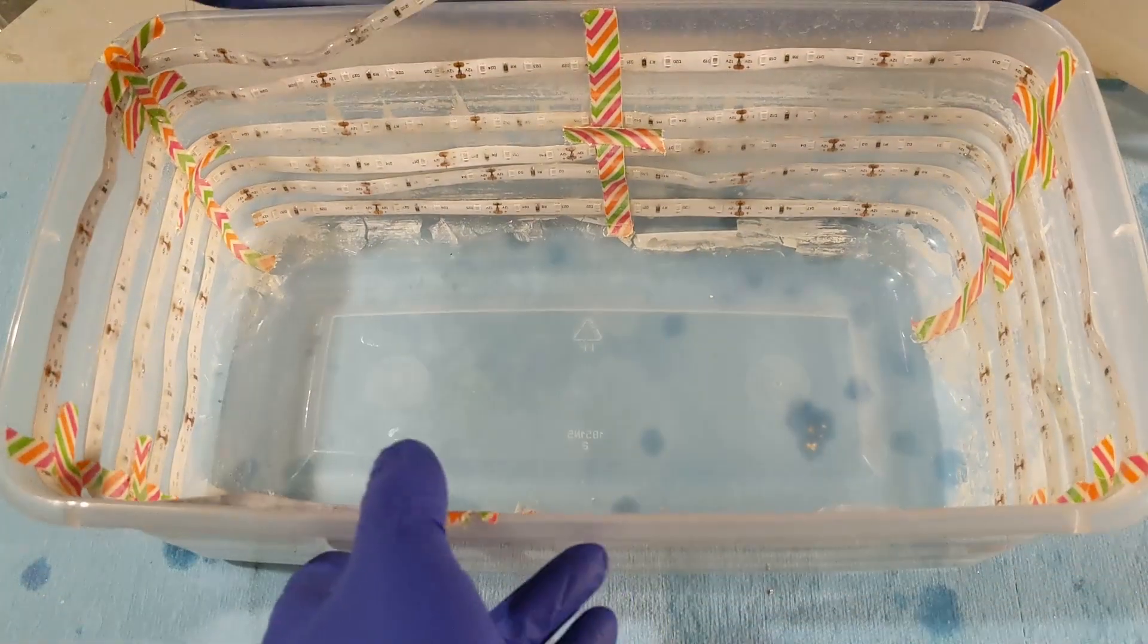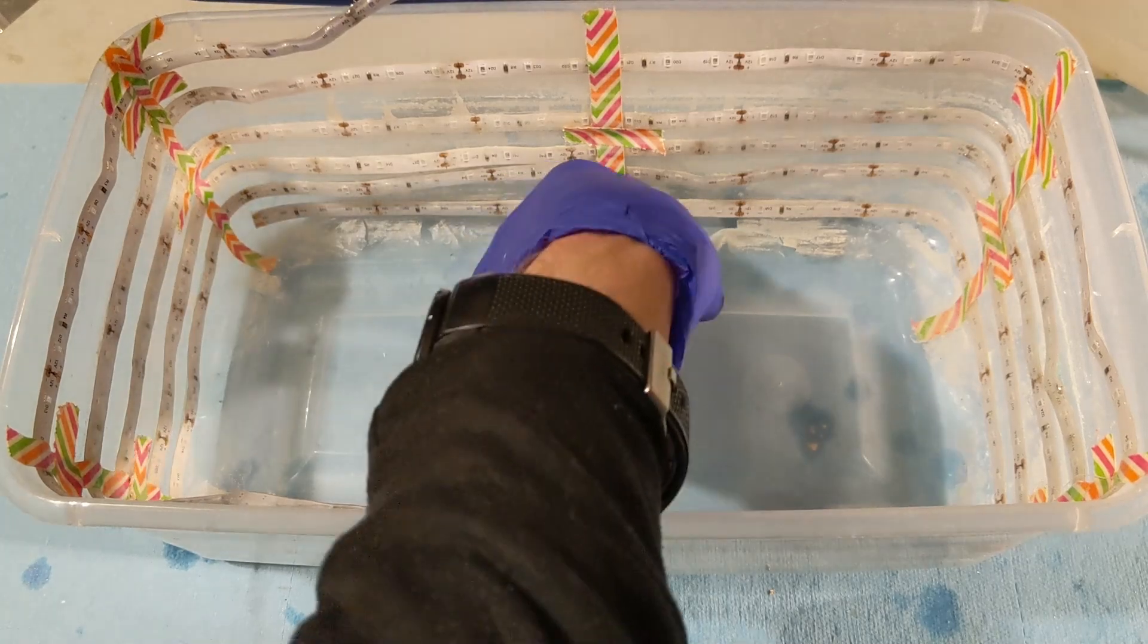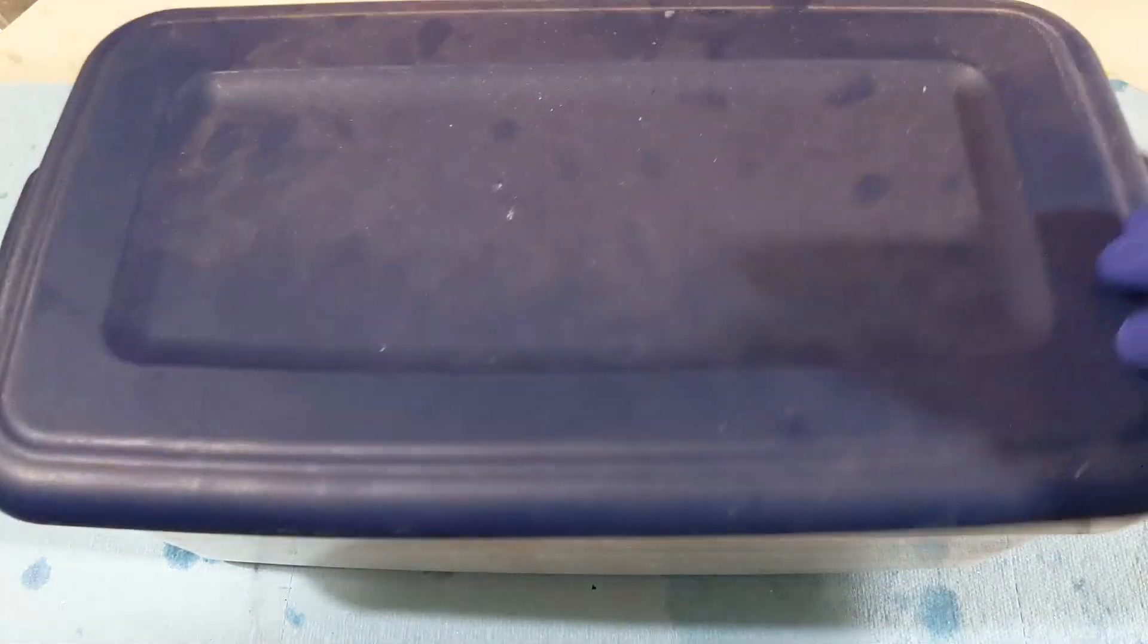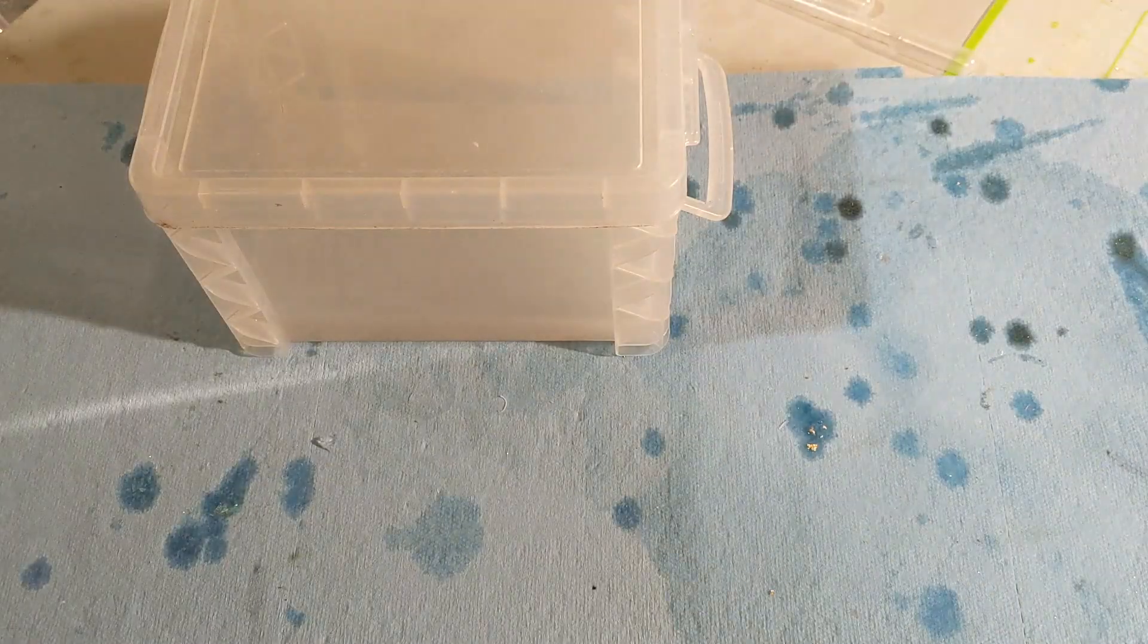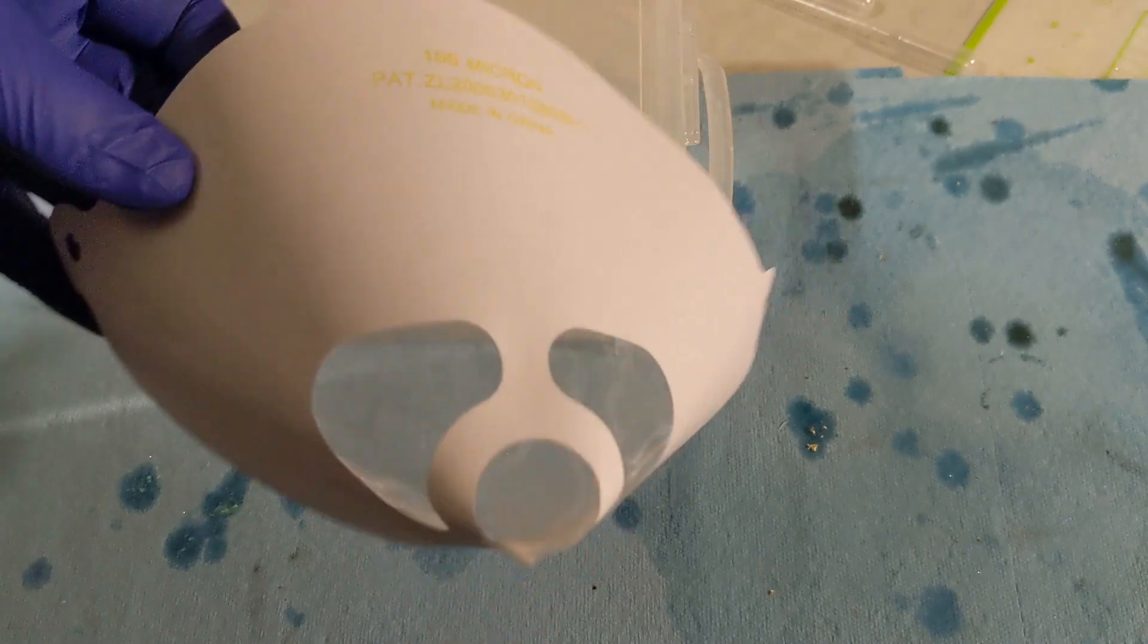UV resin is considered hazardous waste unless it is cured so for the disposal of resin we need to make sure it's cured first. So my thought is why not just cure the resin that's in this alcohol and then filter out that resin and reuse the alcohol.